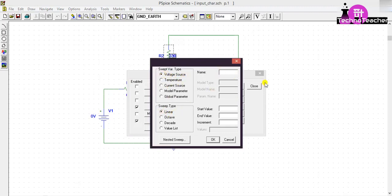Then give the name of the voltage source which is V1. Start value 0, end value 1, and increment 0.01.